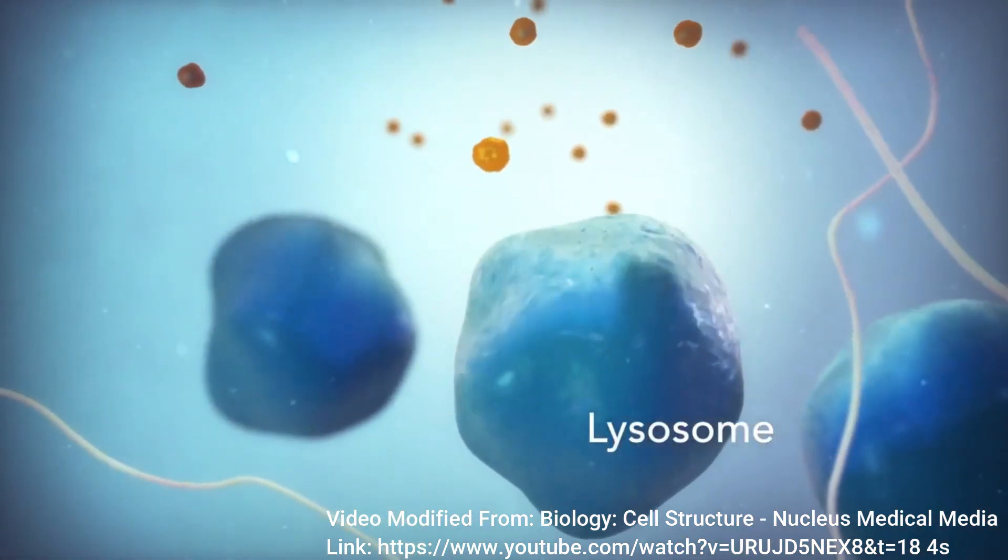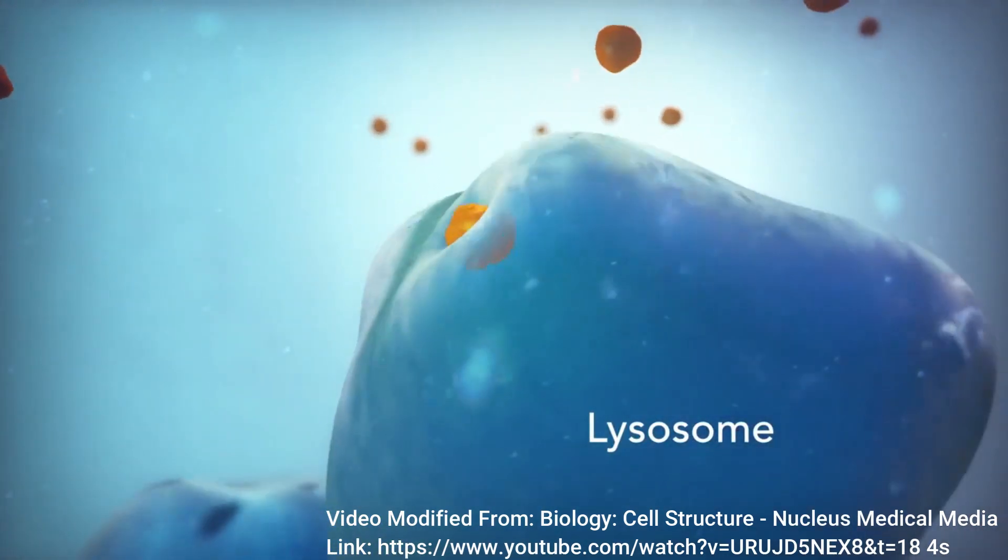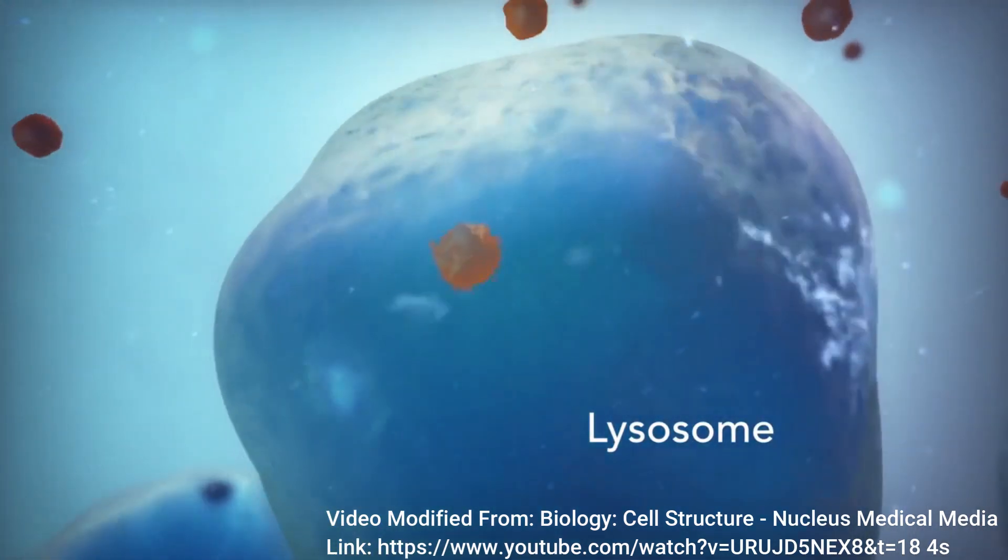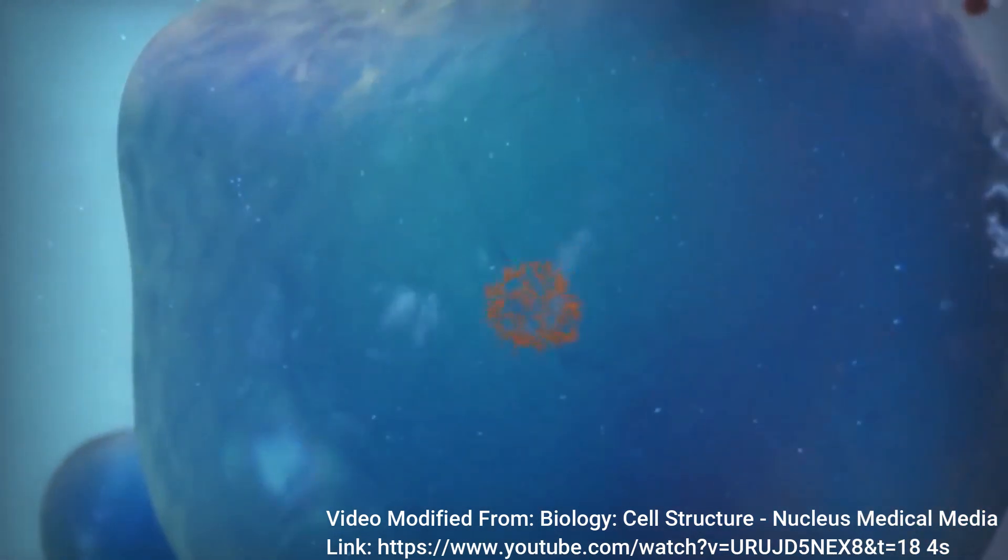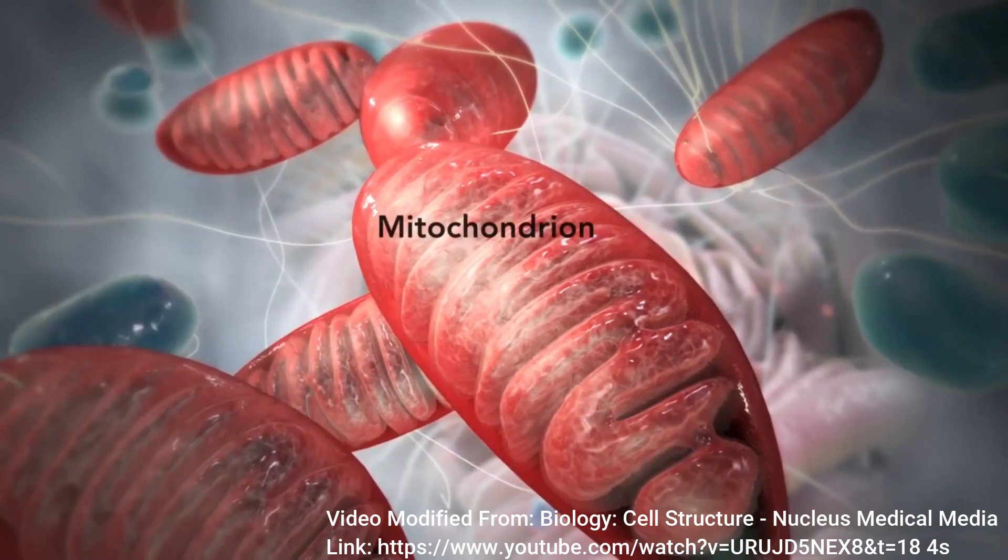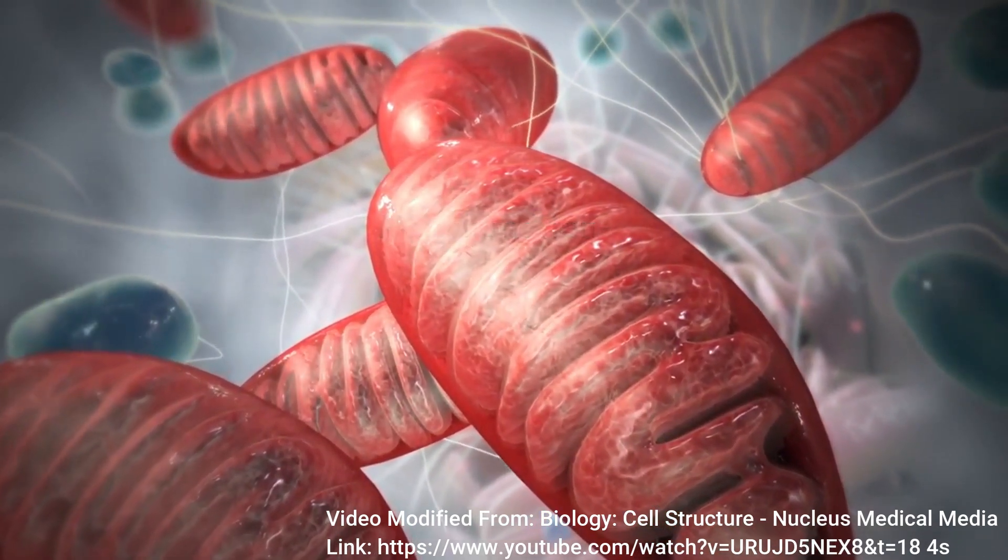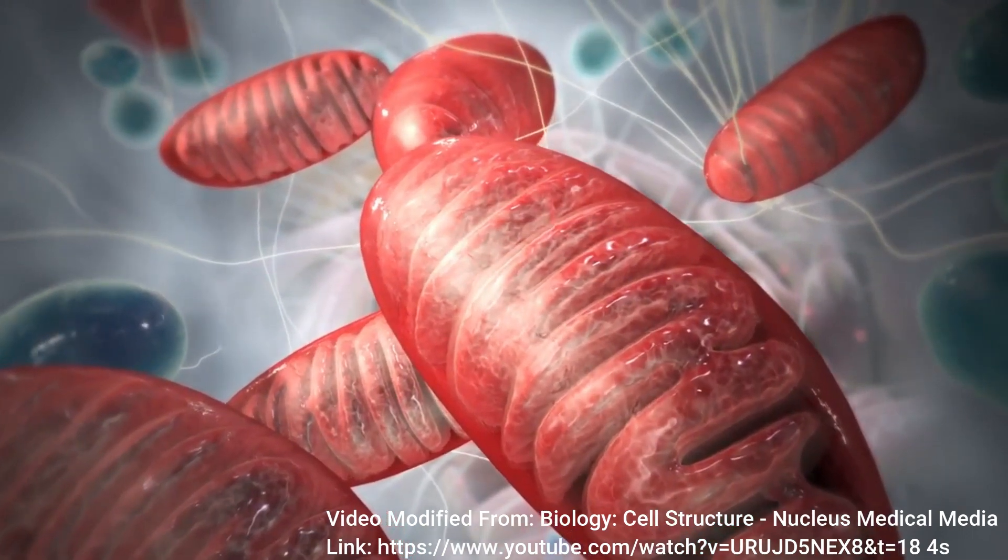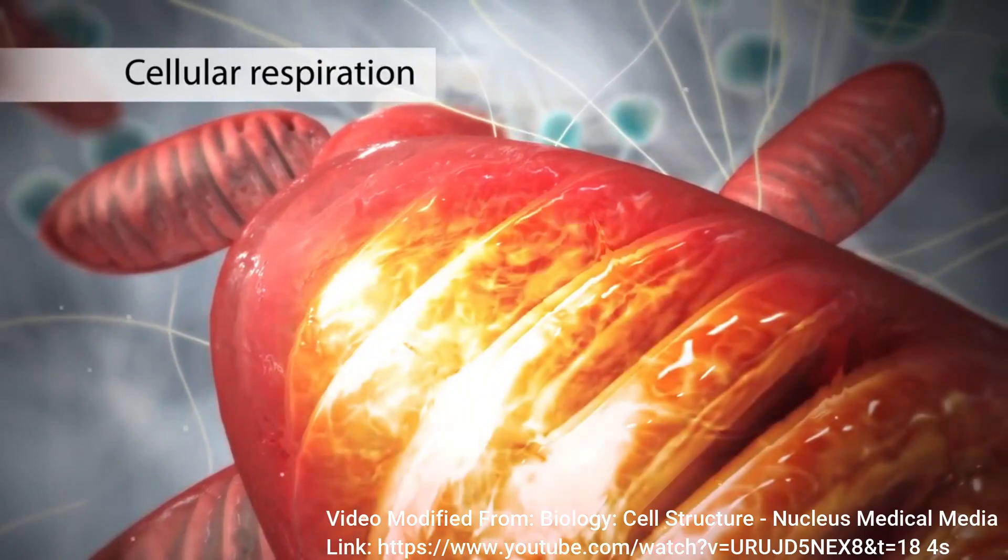Lysosomes are only found in animal cells and are membrane-bound sacs of digestive enzymes that break down worn out or damaged cell parts. They can be thought of as the garbage collectors of the cell. The mitochondria provides energy for both plants and animal cells. This is the site of cellular respiration that produces ATP. In future videos, we will discuss this process.